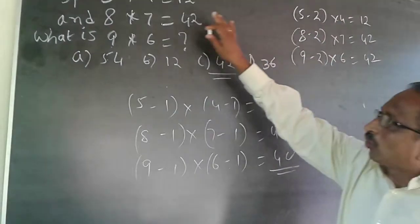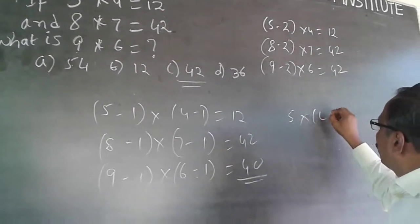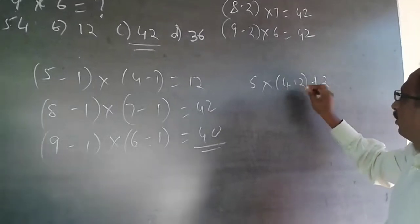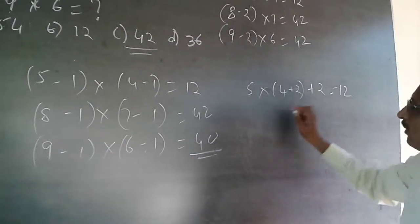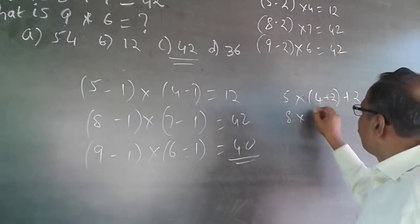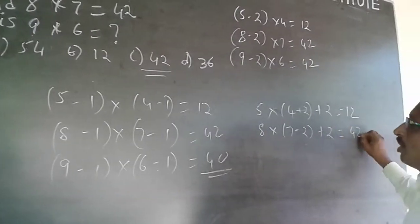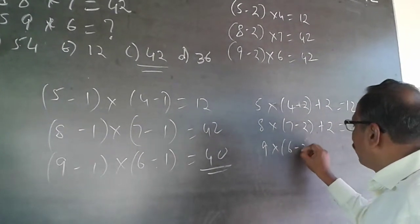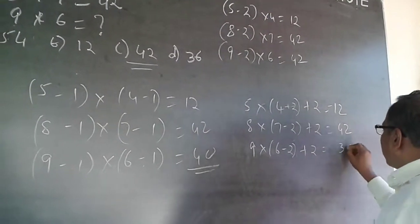One more answer could be possible. Consider: 5 into 4 minus 2, which is 10, plus 2 equals 12. Checking: 8 into 7 minus 2 is 40, plus 2 equals 42 — it matches. Applying it: 9 into 6 minus 2 is 36, plus 2 equals 38.